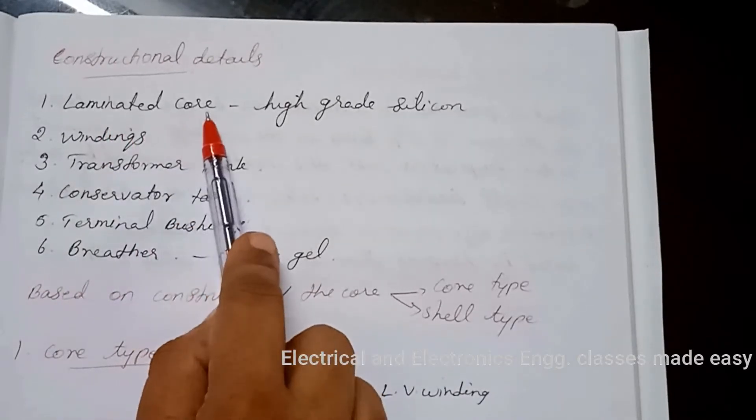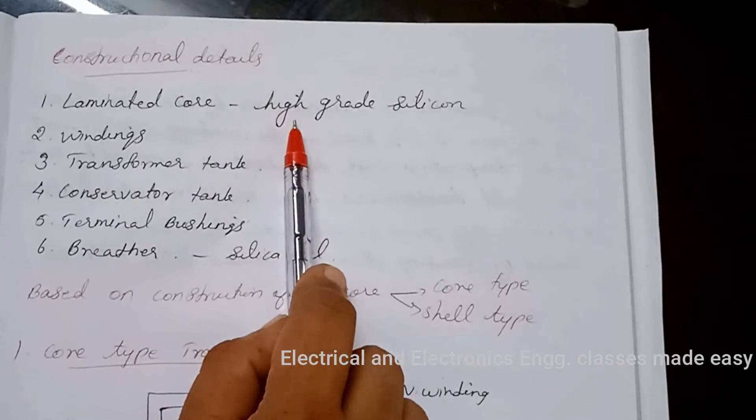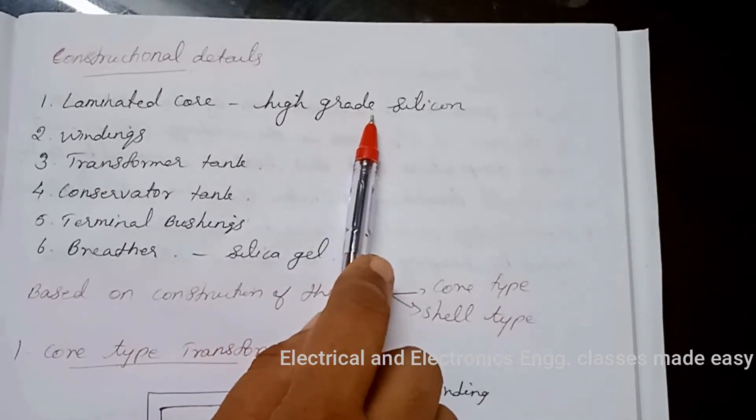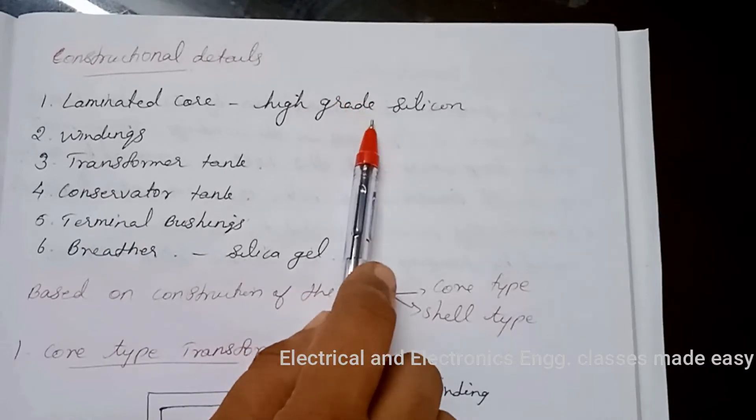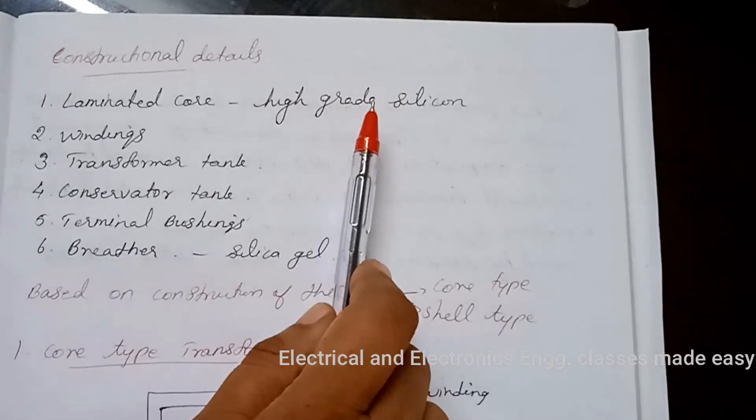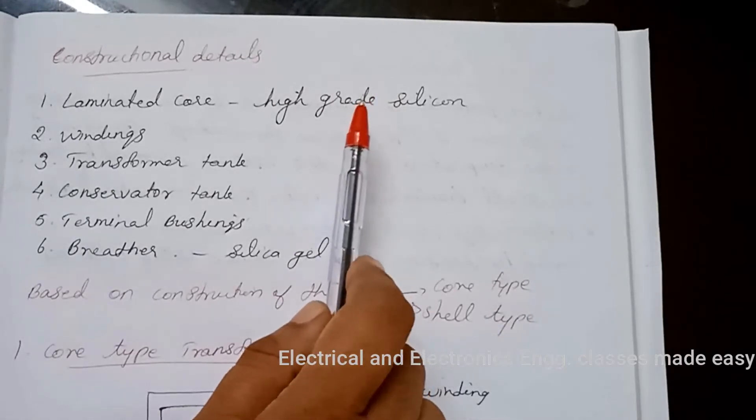Laminated core. The material of transformer core is high-grade silicon in the form of several laminations. These laminations are insulated from each other by a light coating of varnish on the surface.